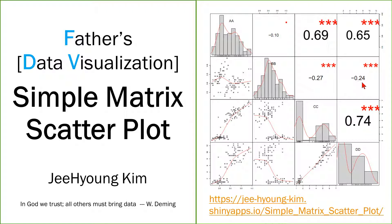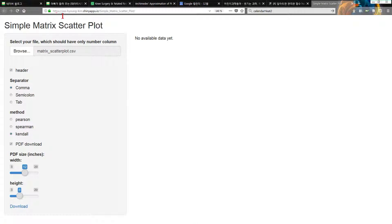Simple. For example. This is the address page. We are going to do. This is the address. Jihyung Kim. My name. And so on. And simple matrix scatter plot.